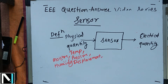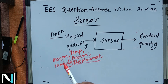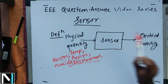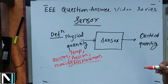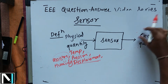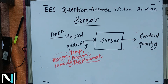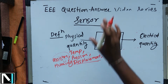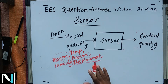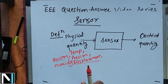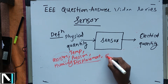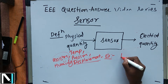In order to measure physical quantities — such as temperature of the environment, pressure, displacement, or moisture and humidity in the air or soil — these physical quantities need to be converted into electrical quantities. This is because the electrical quantities are provided to the microcontroller. So the simple definition of a sensor: it is a device which converts the physical quantity into the electrical quantity.